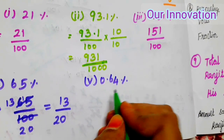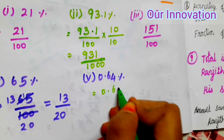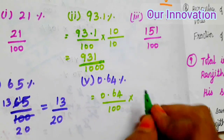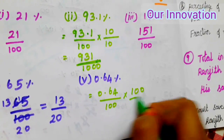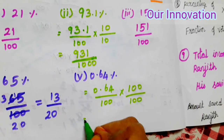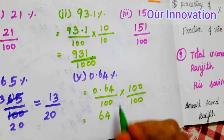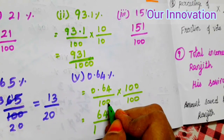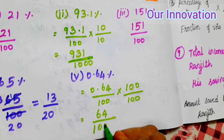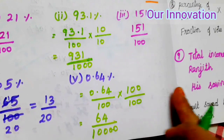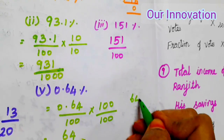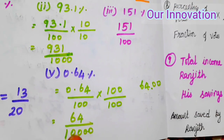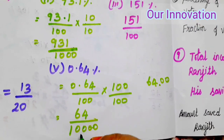Next: 0.64 percentage is equal to 0.64 by 100. The decimal has 2 places, so multiply by 100 over 100: 0.64 by 100 × 100 by 100 equals 64 by 10,000. Now cancel. 64 by 10,000.